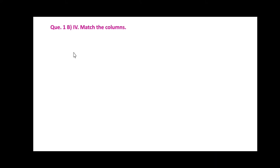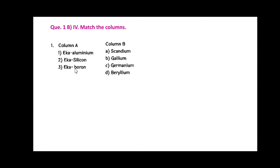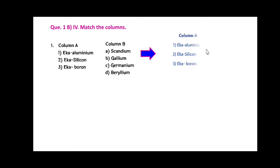Match the columns. In column A there are given Eka-aluminium, Eka-silicon, and Eka-boron, whereas in column B scandium, gallium, germanium, and beryllium are given. You have to match the pairs. The answer is: Eka-aluminium is gallium, Eka-silicon is germanium, and Eka-boron is scandium.